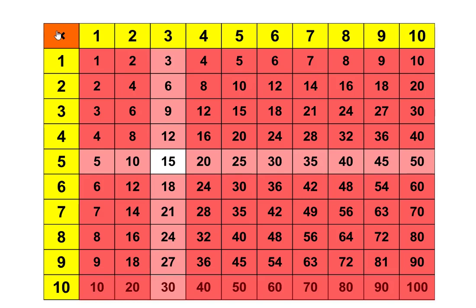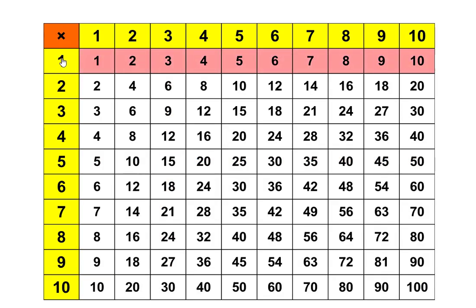You'll remember in the last video that I mentioned memorizing the multiples of one was very easy to do. Why was that? It has to do with the identity property of multiplication. Let's look at an example.